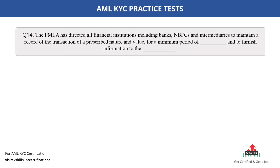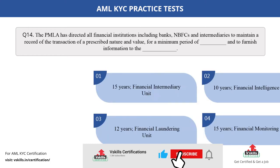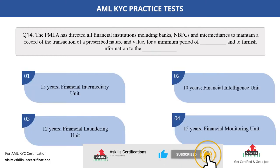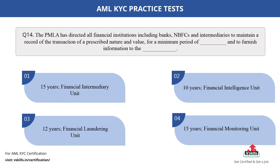Question number 14. The PMLA has directed all financial institutions including banks, NBFCs, and intermediaries to maintain a record of the transaction of a prescribed nature and value for a minimum period of dash, and to furnish information to the dash. Fill in the blank. The options are: A. 15 years, Financial Intermediary Unit; B. 10 years, Financial Intelligence Unit; C. 12 years, Financial Laundering Unit; D. 15 years, Financial Monitoring Unit. The correct answer is option B.